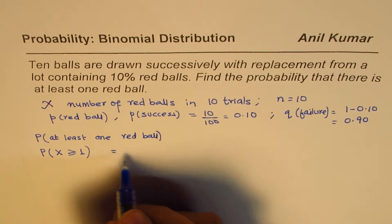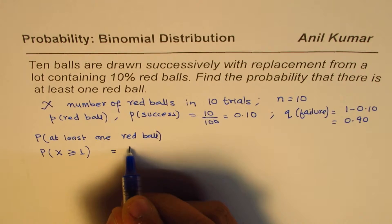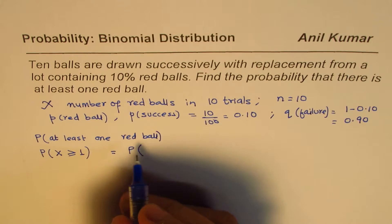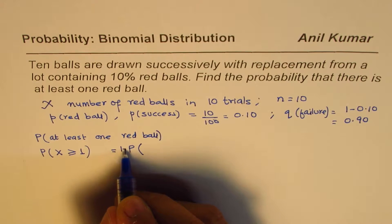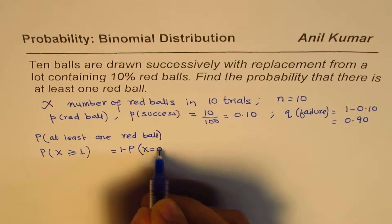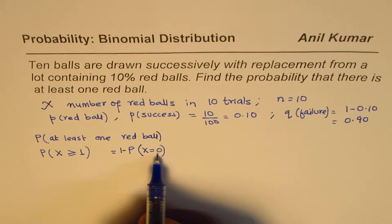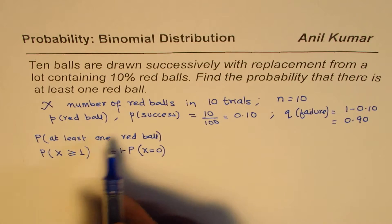Or we could also write this as the probability that there is no red ball at all. So if we do that, we have to do 1 minus probability when there is no red ball. So it is one and the same thing when there is no red ball, that is, X equals 0. So that is how we could simplify this.